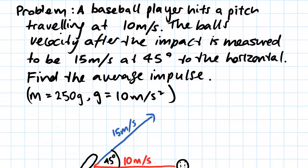A baseball player hits a pitch traveling at 10 meters per second. The ball's velocity after the impact is measured to be 15 meters per second at 45 degrees to the horizontal. We've been asked to find the average impulse.